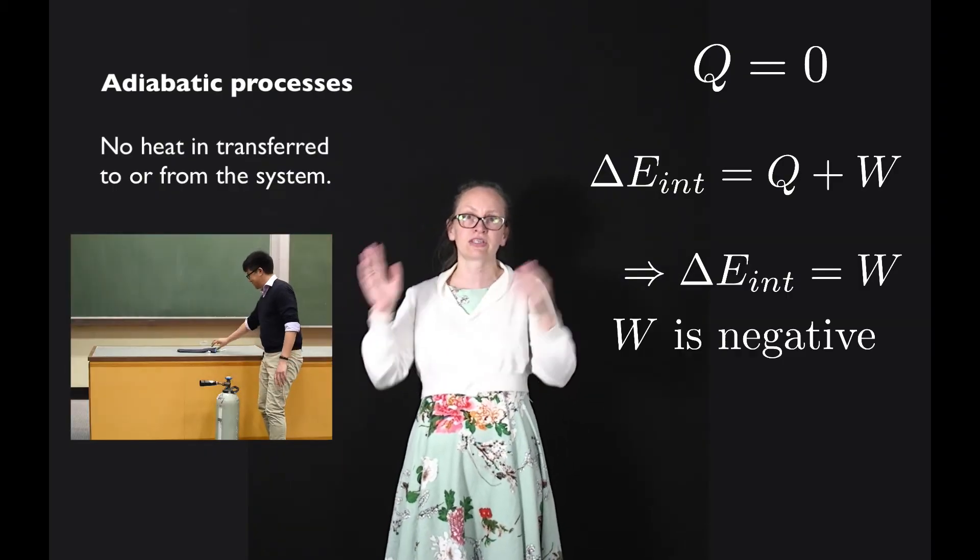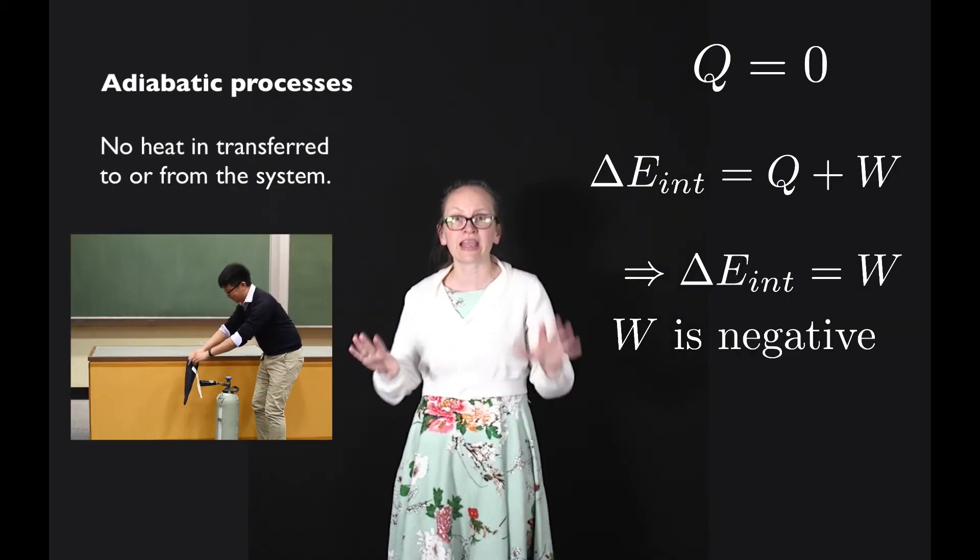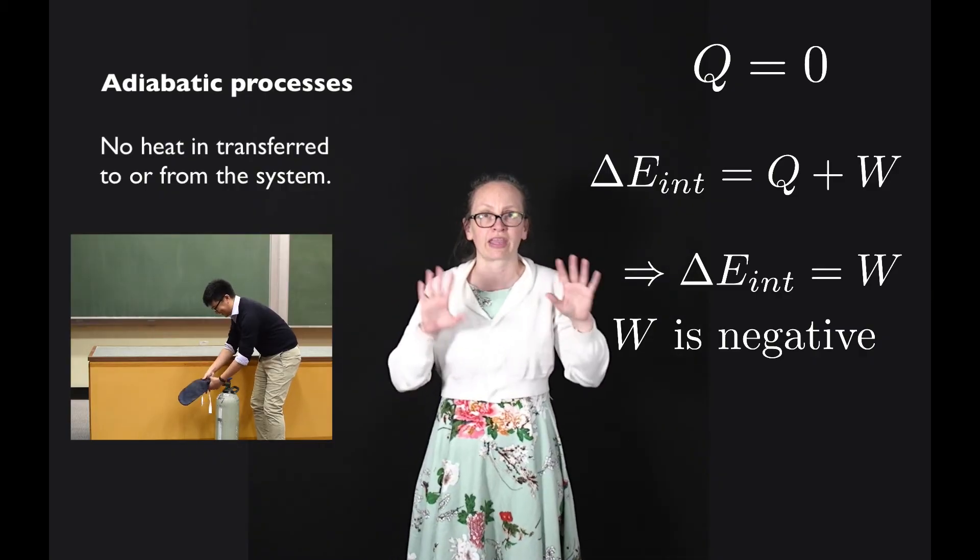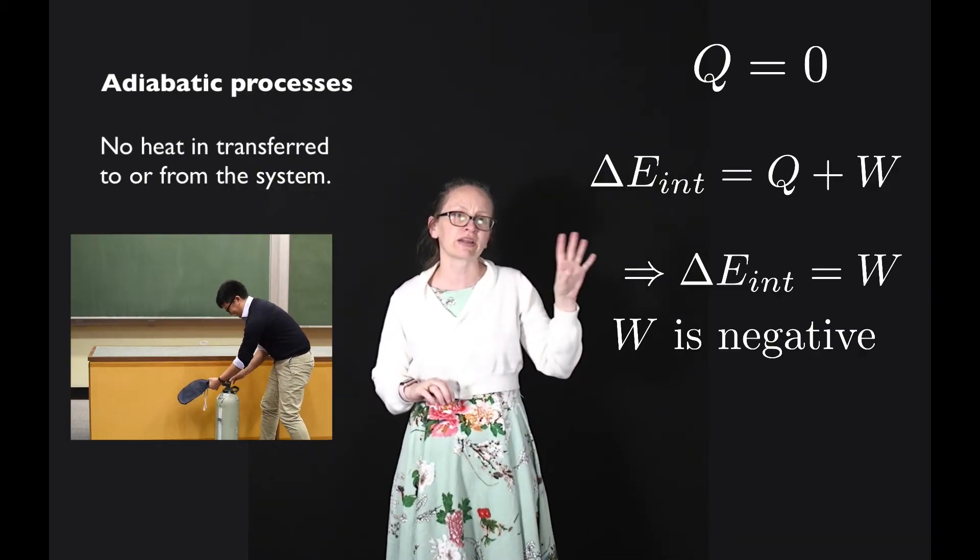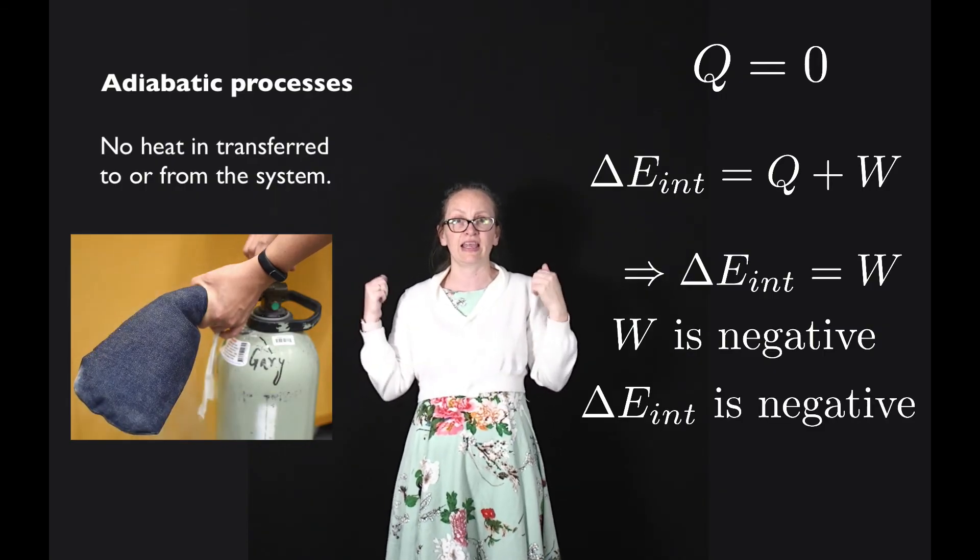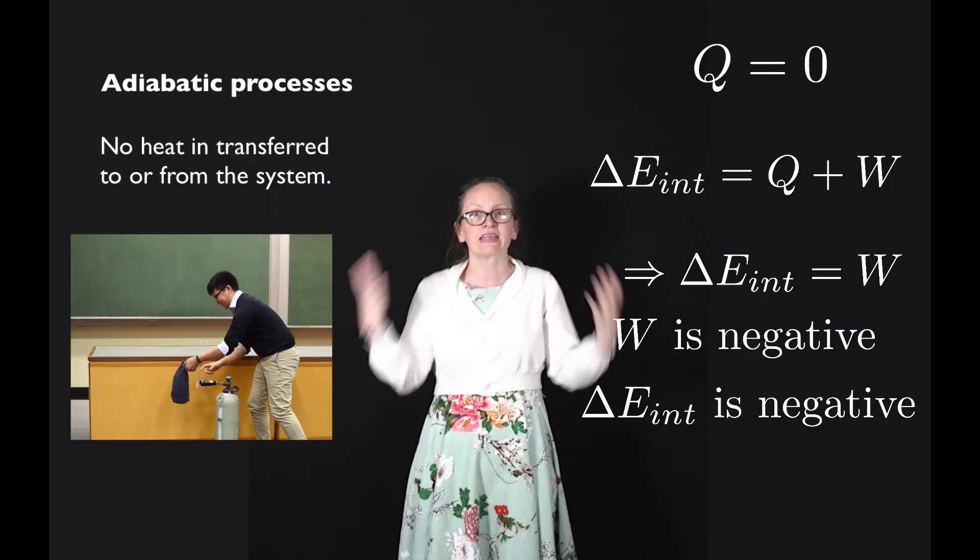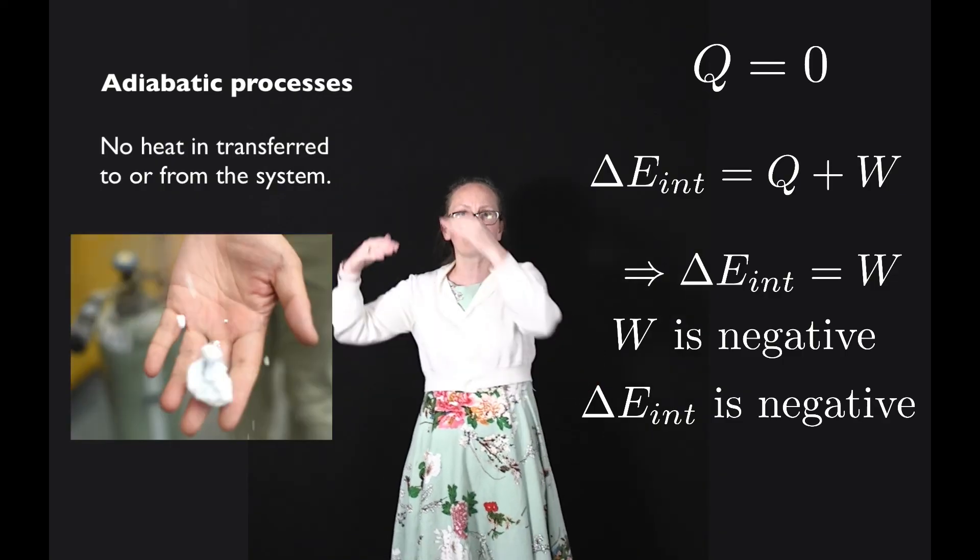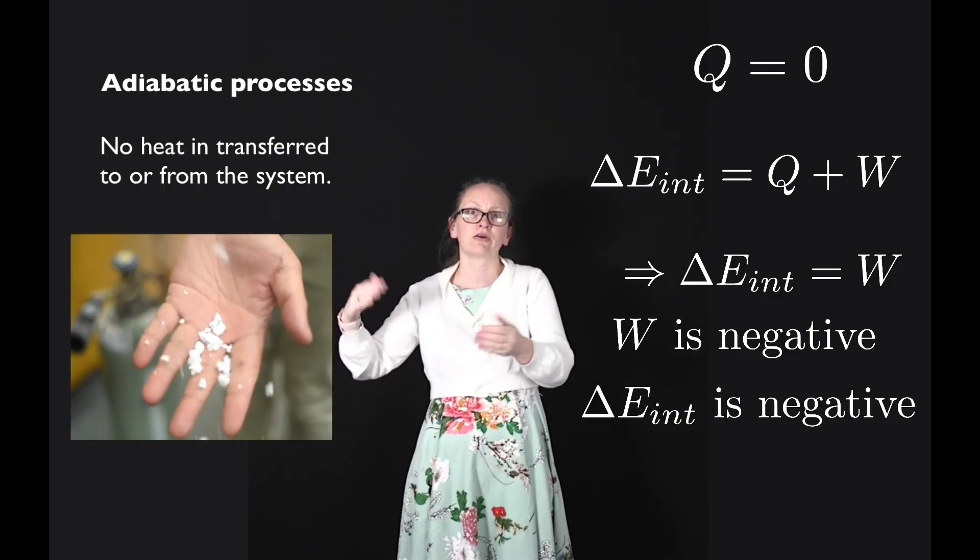So how this works is that when Michael opened the flask, the gas rushed out. In this case, the gas was expanding, and so negative work was done on the gas. Now if negative work is done on the gas, it means that we need to have a decrease in the internal energy of the gas, given that there was no heat transfer.